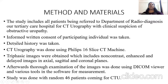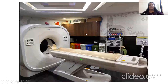Coming on to the methods and materials: the study includes all patients referred to the Department of Radiodiagnosis of our tertiary care hospital for CT urography with clinical suspicion of obstructive uropathy. Informed written consent of the participating individuals was taken and detailed history was taken. CT urography was done using a Philips 16-slice CT machine. Triphasic images were obtained, including non-contrast enhanced and delayed images in axial, sagittal, and coronal planes. Thorough examination of the images was done using a DICOM viewer, and the study was done on a random sample of 46 patients coming for CT urography.